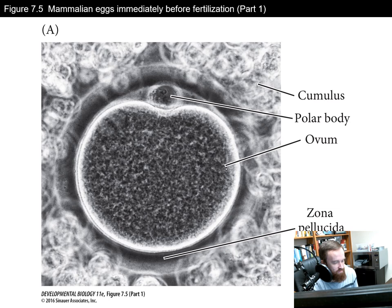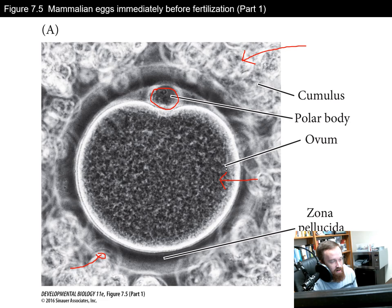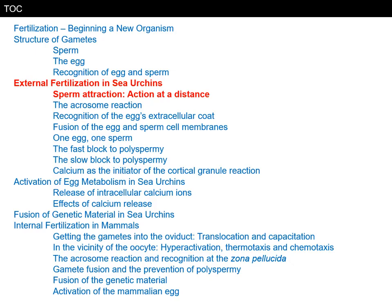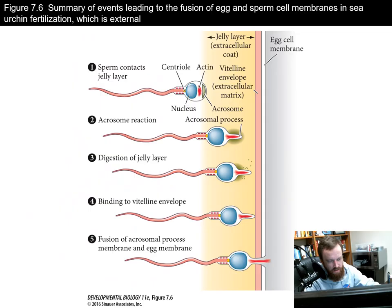Looking at a mammalian egg just before fertilization, we see the ovum itself, the zona pellucida (the surrounding glycoprotein layer), a polar body — a remnant of the meiosis process — and the cumulus. The cumulus cells are former follicular cells that nurtured the egg during its release from the ovary. The sperm must navigate through these cumulus cells to reach and fertilize the egg.